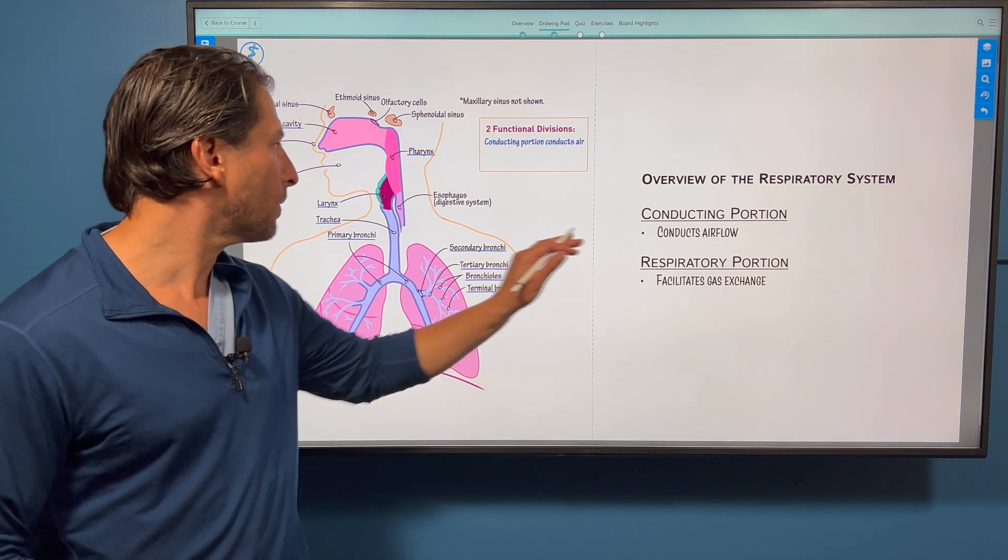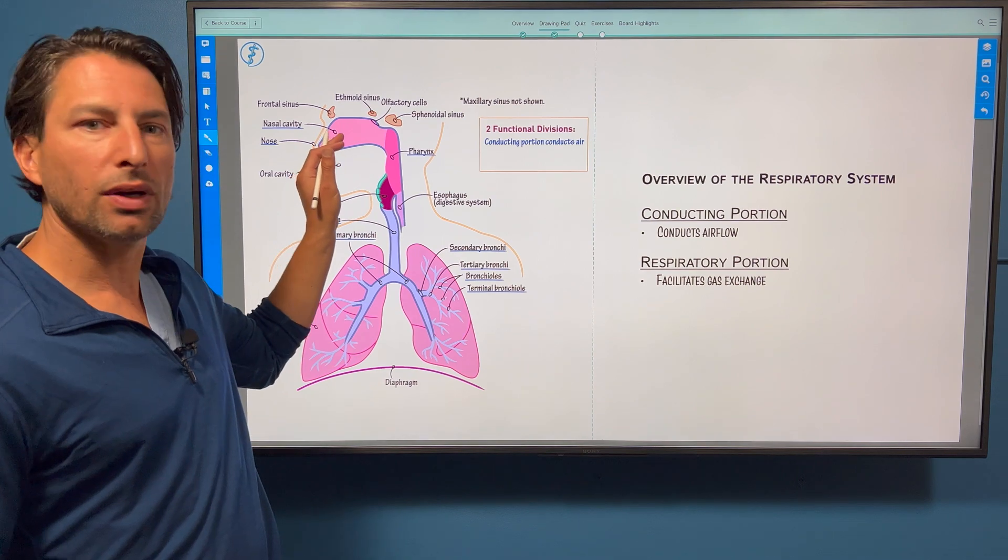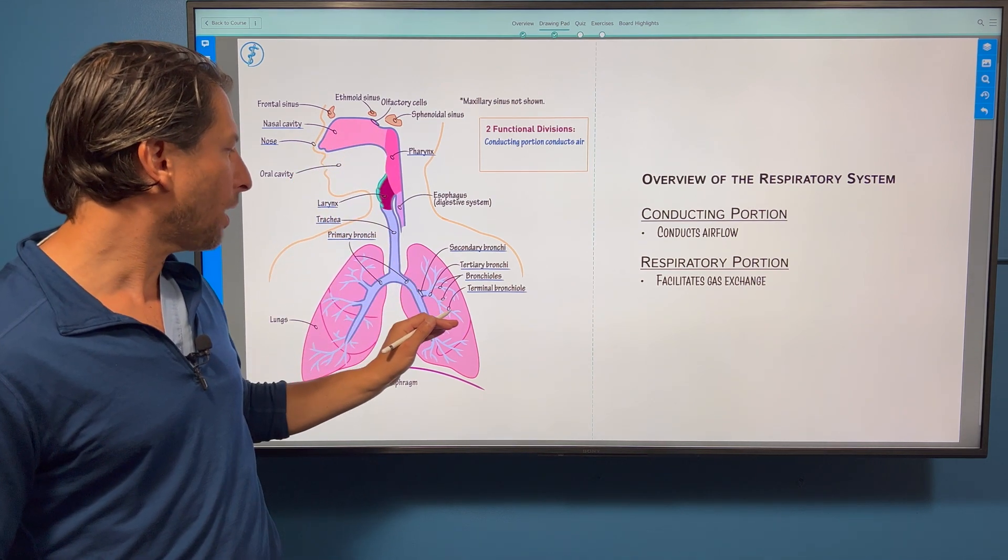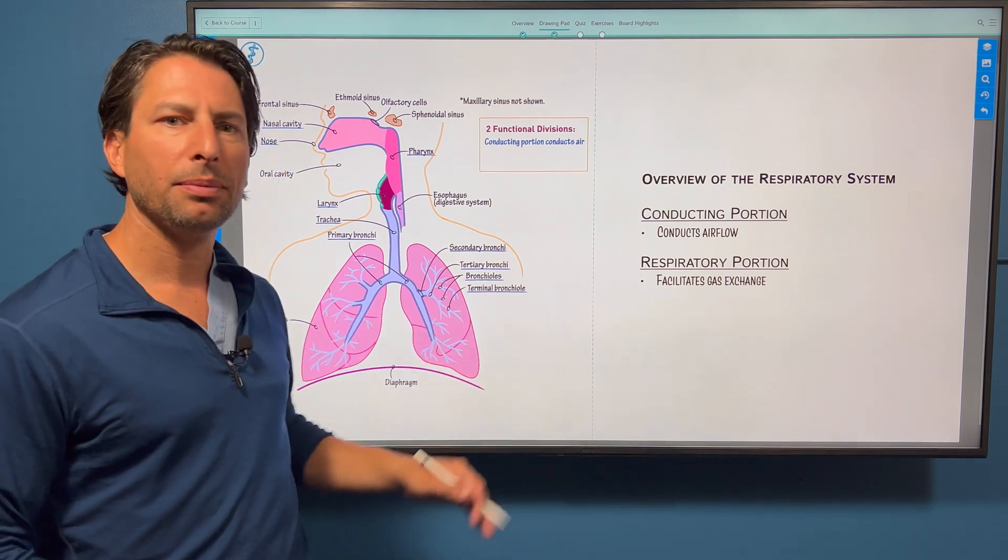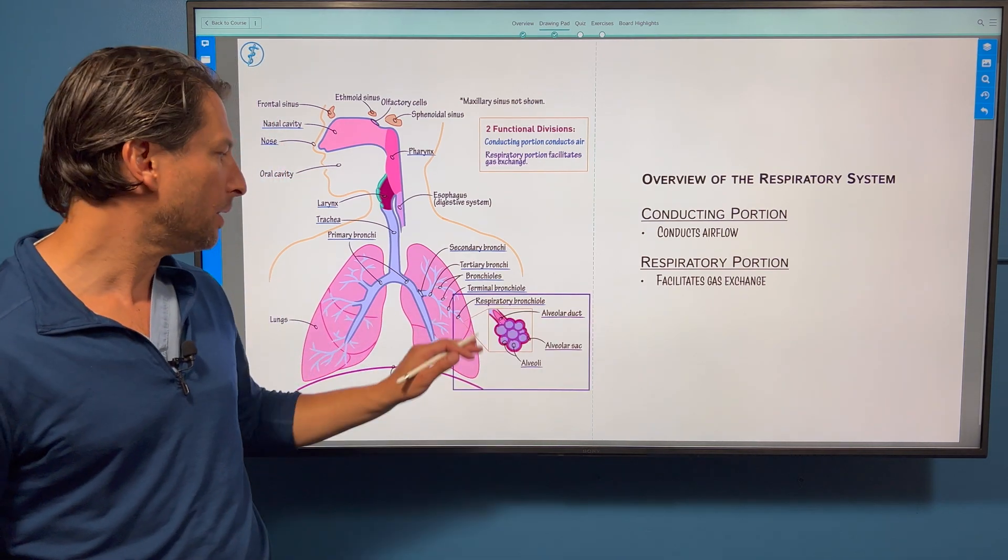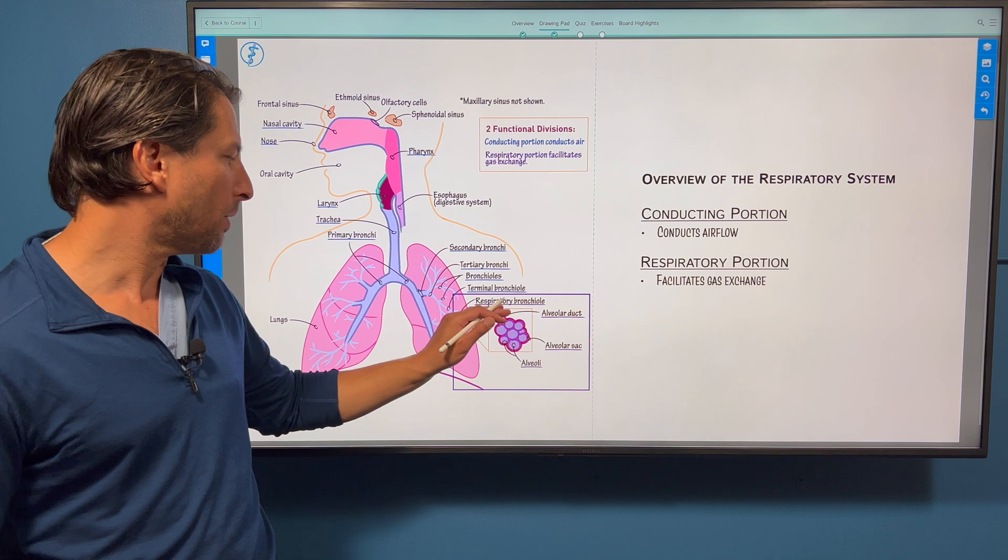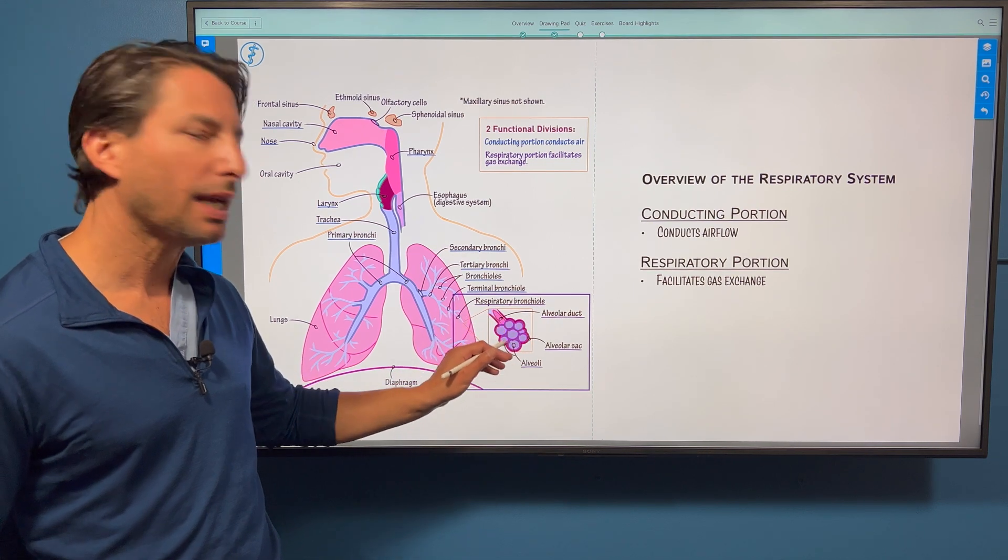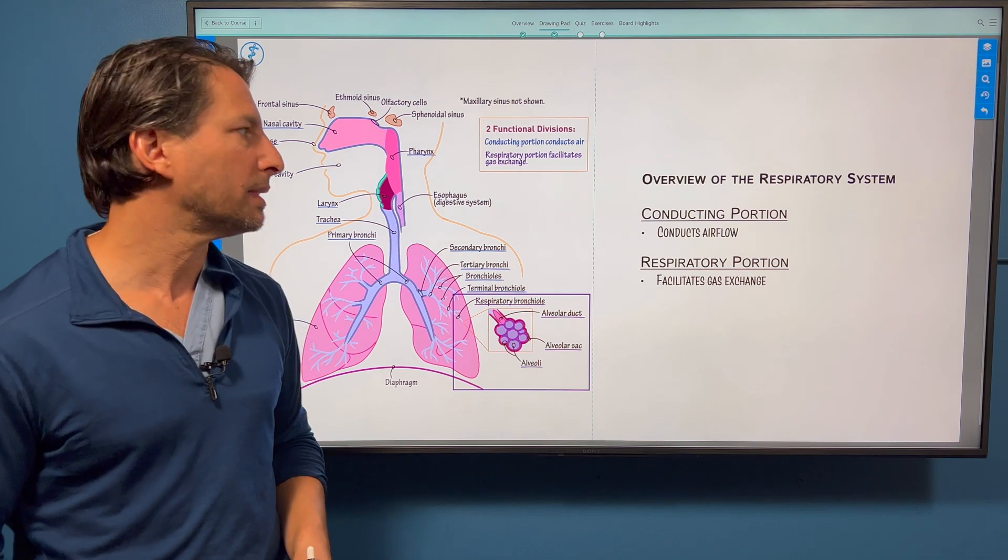We'll start with the conducting portion, which conducts air flow all the way from nasal cavity down into these terminal bronchioles. And then we have the respiratory portion, starting with the respiratory bronchiole right here, alveolar duct coming down, alveolar sac, and the alveoli themselves.